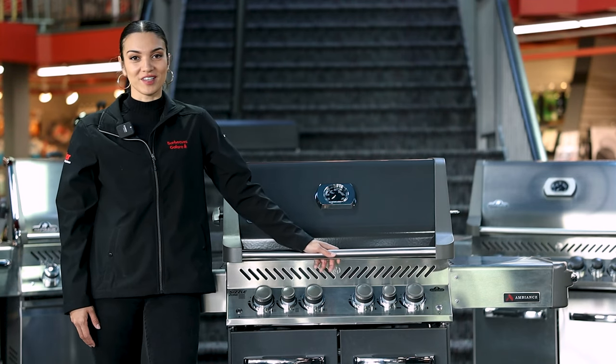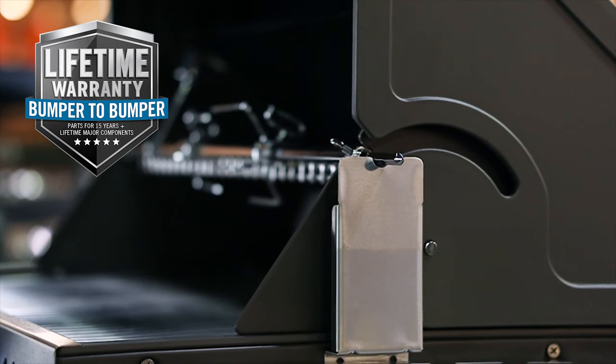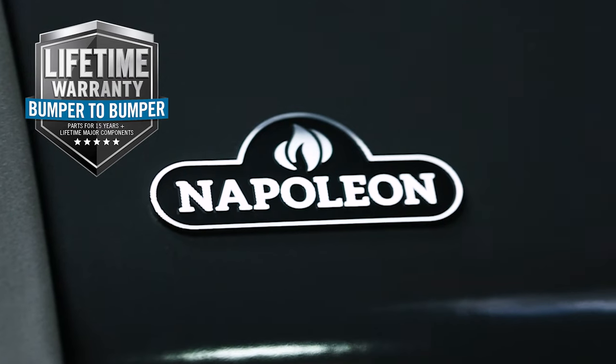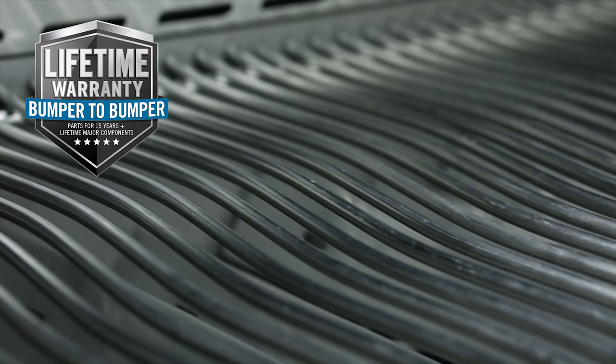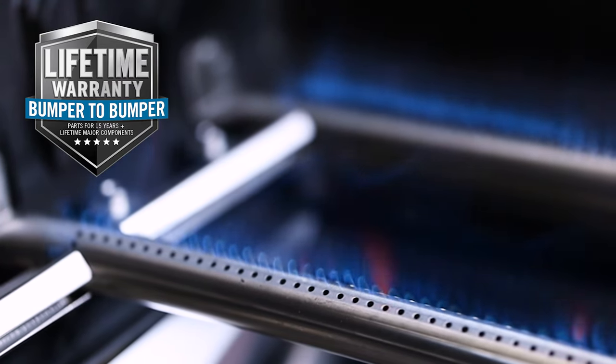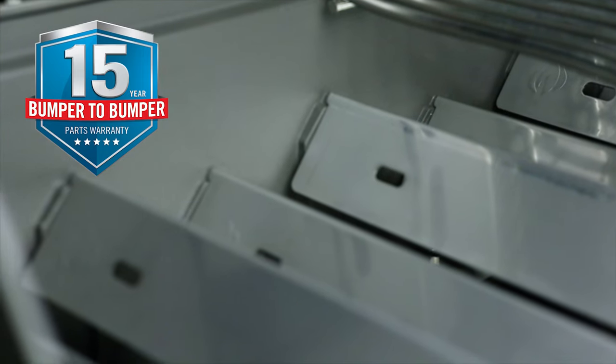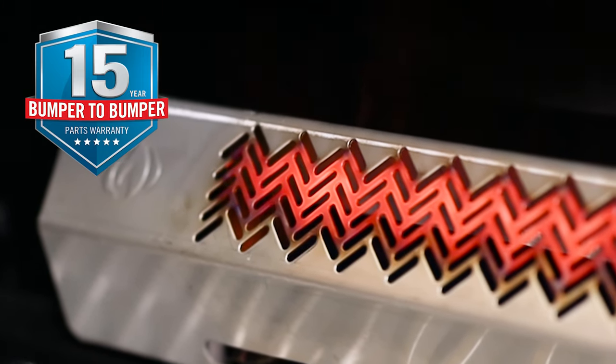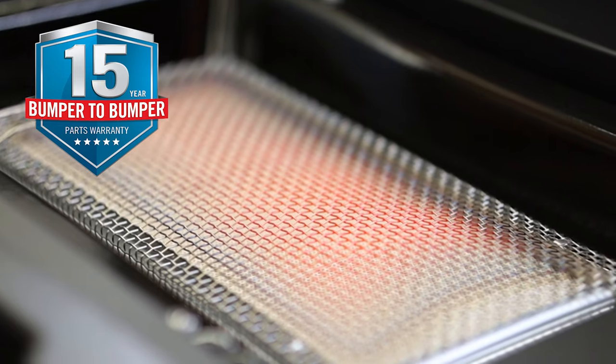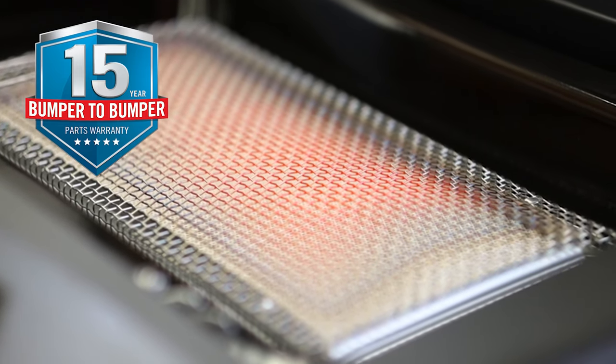Now let's move on to the warranty. Napoleon's Lifetime Warranty includes the hood, porcelain and enamel lid, aluminum castings, stainless steel cooking grids, and stainless steel tube burners. The stainless steel sear plates, stainless steel infrared rotisserie, infrared bottom and side burner, and all other parts are underneath their 15-year warranty.